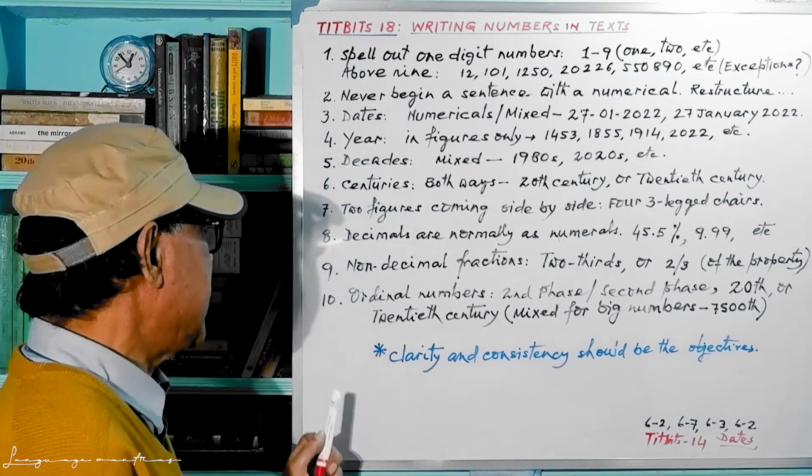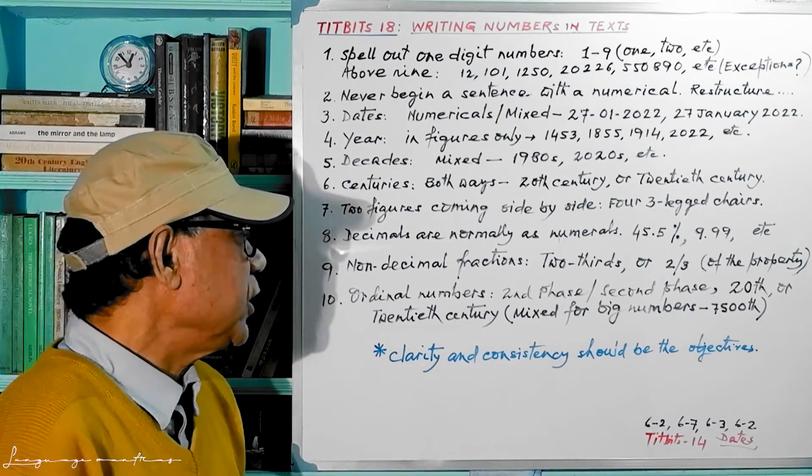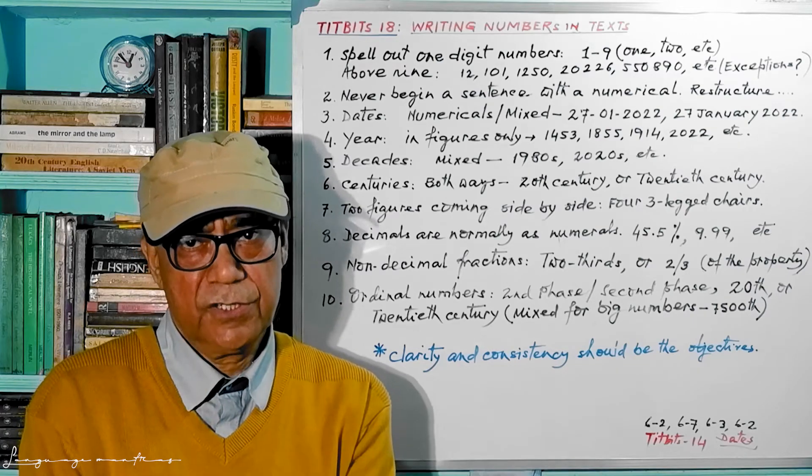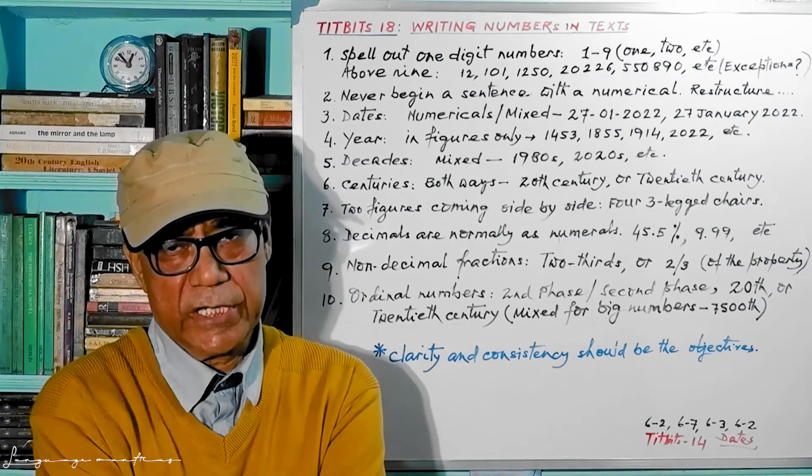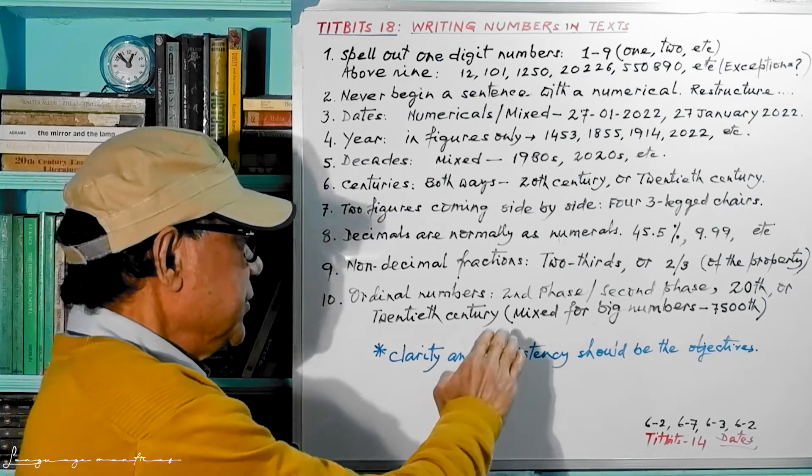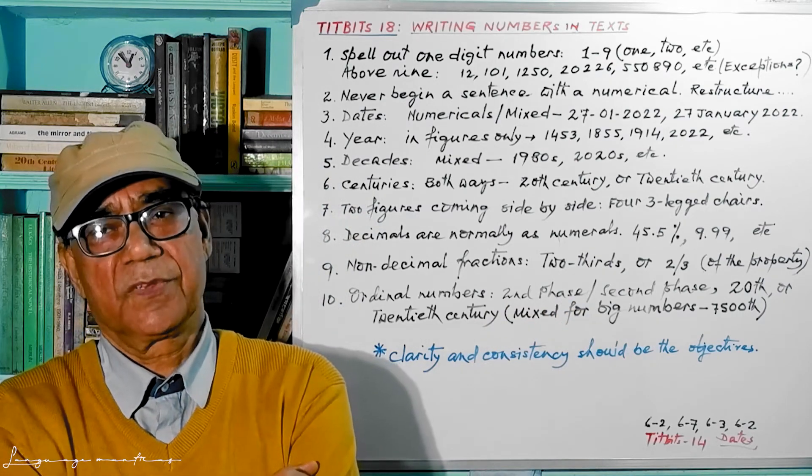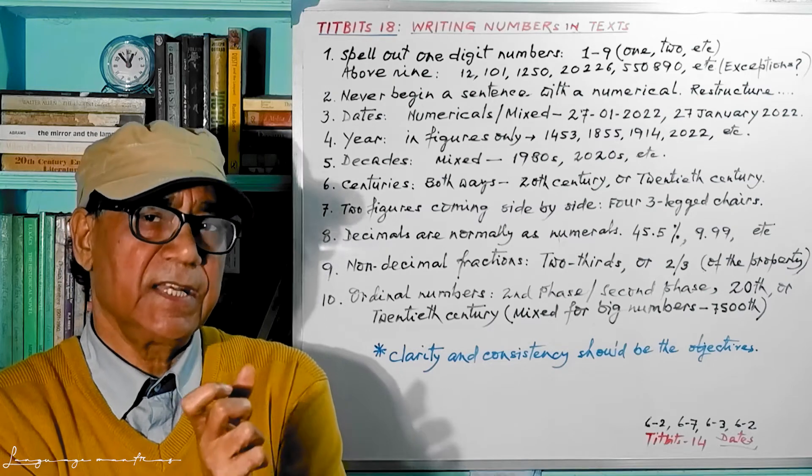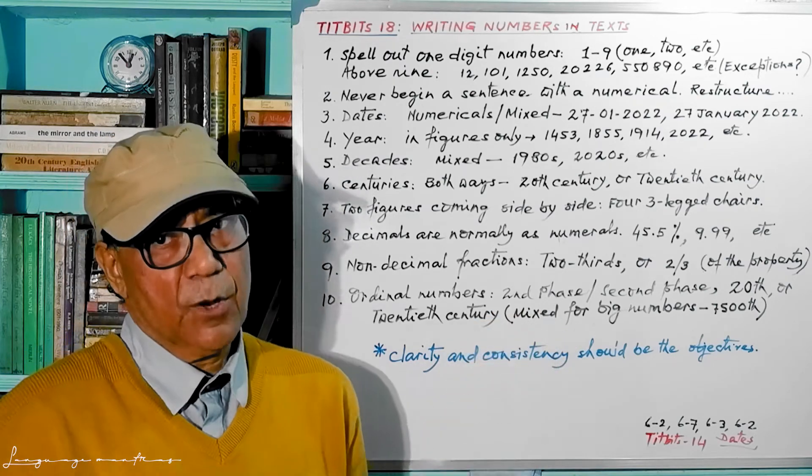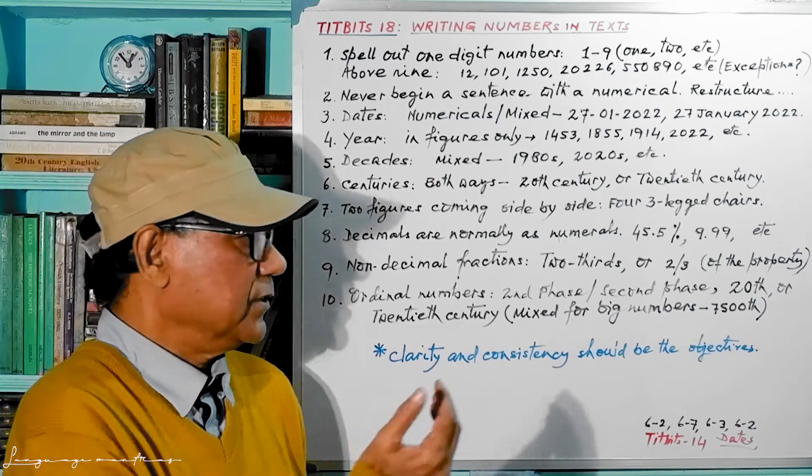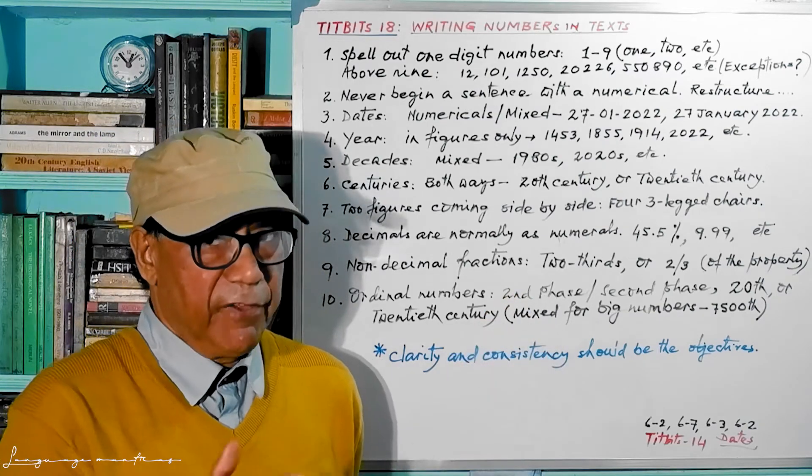Now come to the last point, that is number 10: ordinal numbers. Ordinal numbers: first, second, phase. This is second to eighty-second, so second then phase. So you write second in a combination of figure and letter: 2nd, eighty then phase.